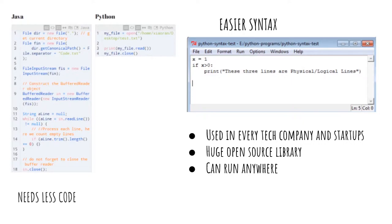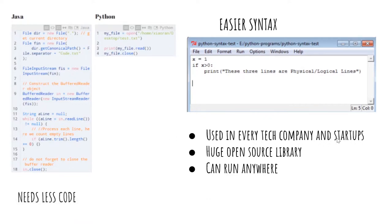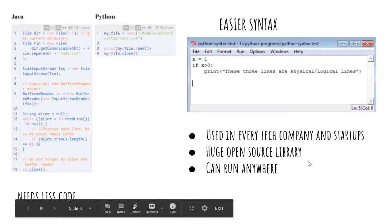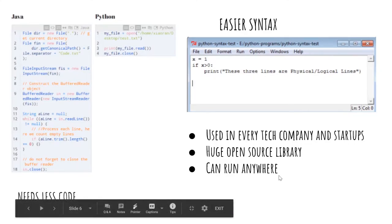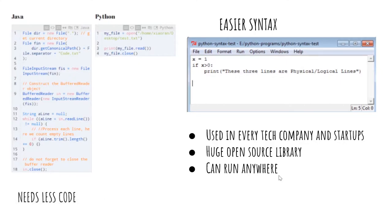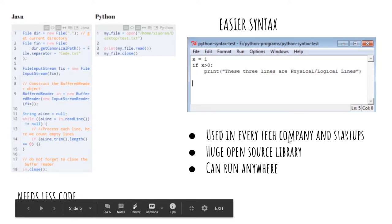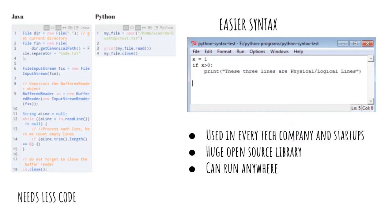Python has easier syntax — for example, x equals one, and if x is greater than zero, print something. It's easily readable, writable, and executable. Python is used in every tech company and startup, it's open source, and you can run it anywhere. The main disadvantage of Python is it's slow compared to other languages — if you need performance, Python will fall short.